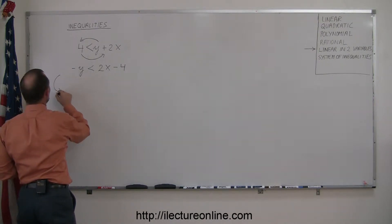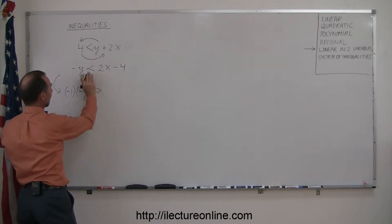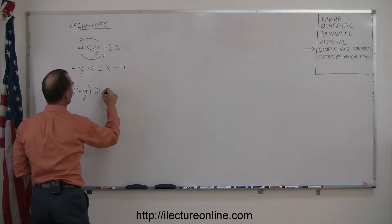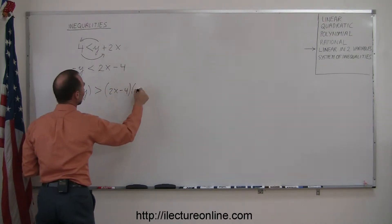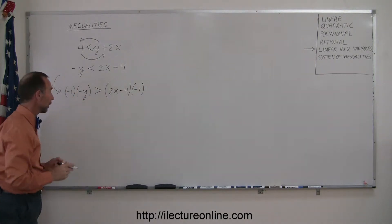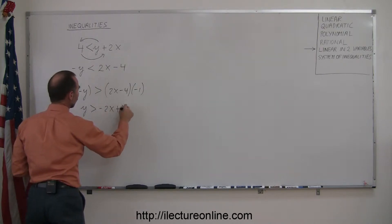So this can be written as negative 1 times minus y is now greater than, because I'm multiplying by negative 1, I flip the symbol over, so we get 2x minus 4 times negative 1. Now we go ahead and apply that, so we have positive y is greater than negative 2x plus 4.